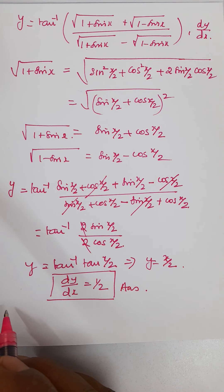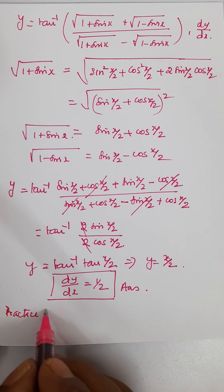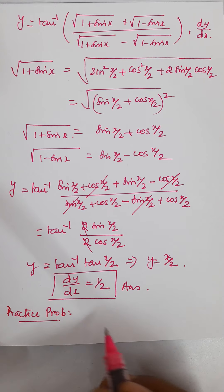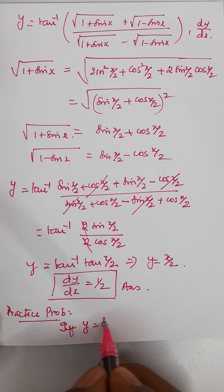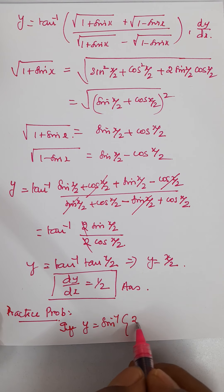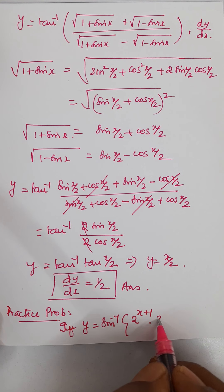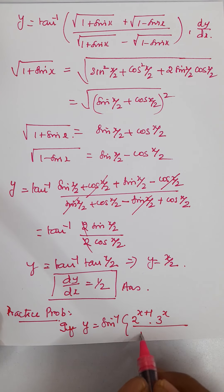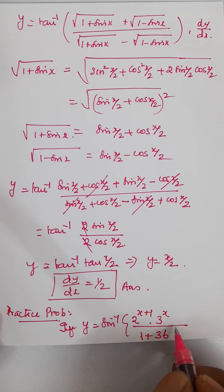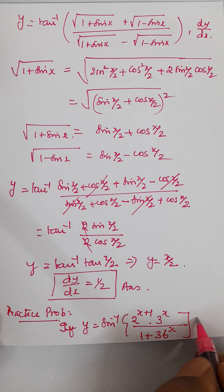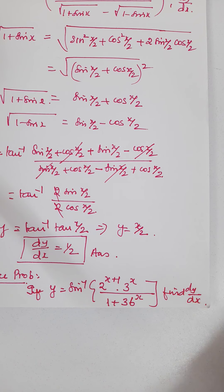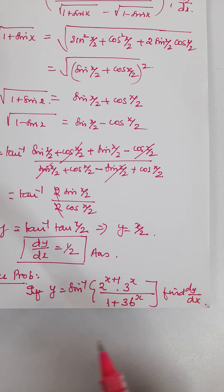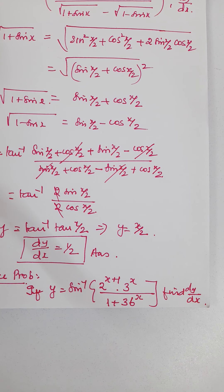I am going to give you one problem for your practice. Try to finish this within one and a half minutes. y is equal to sin inverse of 2 to the power x plus 1 into 3 to the power x, divided by 1 plus 36 to the power x. Find dy by dx. We will see the solution in the next video. Thank you.